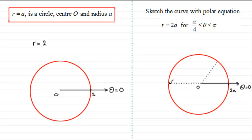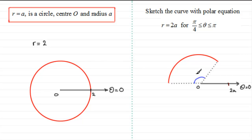So what I'm considering is just part of this circle, going between pi upon 4 radians all the way around to pi radians. We just need to neglect the rest of the curve. What we have then is just this arc here, where theta goes between those values and the radius is 2a.